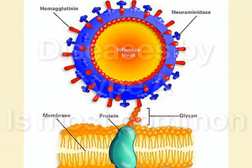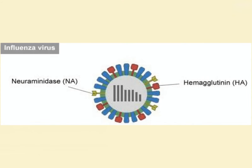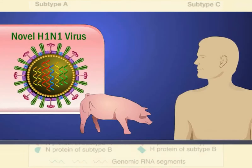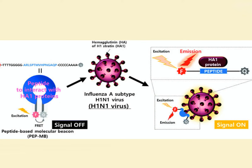Influenza viruses are classified based on two surface proteins: hemagglutinin, known as H protein, and neuraminidase protein, known as N protein. They have different subtypes. For example, H1N1 virus that causes swine flu has H protein type 1 and N protein type 1.